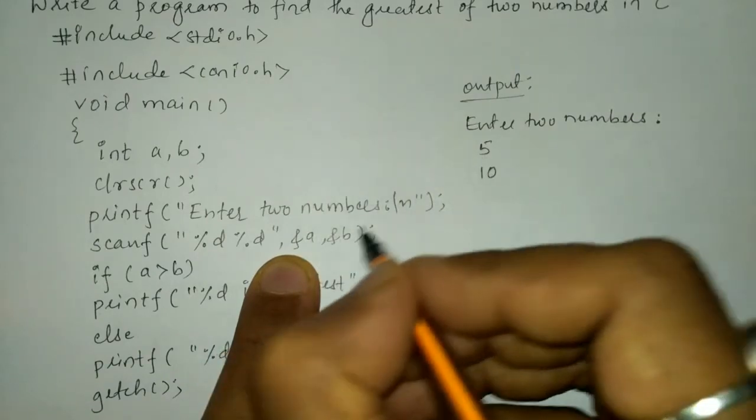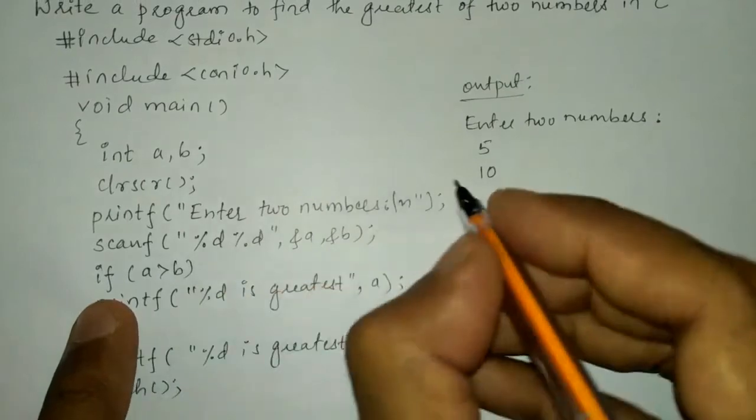5 will be stored in a and 10 will be stored in b. Here we are going to check the condition.